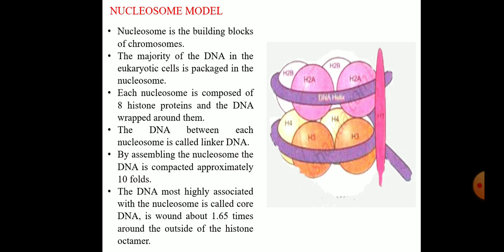Nucleosome model: Nucleosome is the building block of chromosomes. The majority of DNA in the eukaryotic cells is packed in the nucleosome. As we have seen amino acids as the building block of protein and nucleotide as the building block of nucleic acid, the nucleosome is the basic unit of the chromosome. Like a single nucleosome repeats multiple times to form a large compact chromosome.